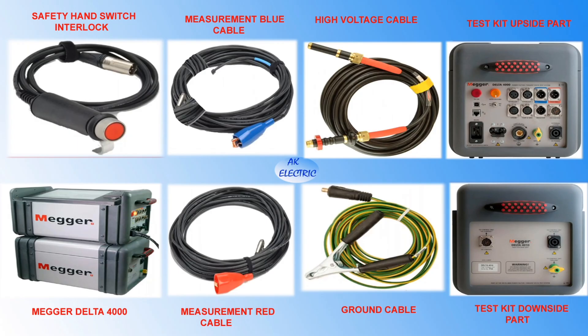This is the testing kit called Mega Delta 4000, which is used for power factor testing for transformer windings, bushings, etc. The testing kit accessories shown include: safety hand switch interlock, measurement blue cable, high voltage cable, measurement red cable, and ground cable.